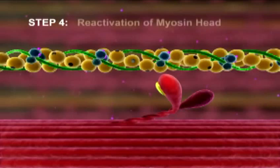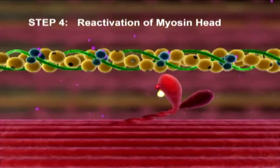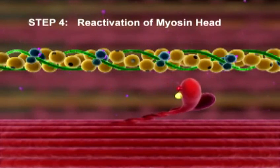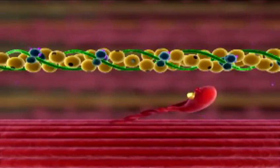Step 4: Reactivation of the myosin head. ATP is hydrolyzed to ADP and inorganic phosphate. The energy released during hydrolysis reactivates the myosin head, returning it to the cocked position.